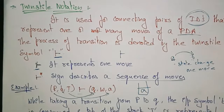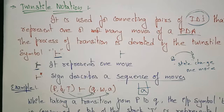Remember these two notations: the ID (instantaneous description) and the turnstile notation. If you understand these two terms, only then can you understand how to convert a given context-free grammar into a pushdown automata. So first, we will see how to design the pushdown automata for a given grammar.